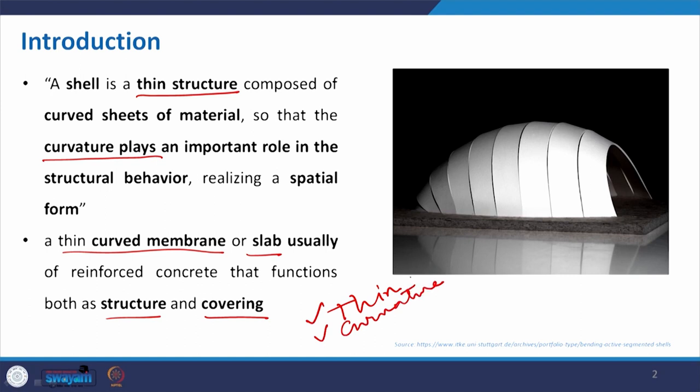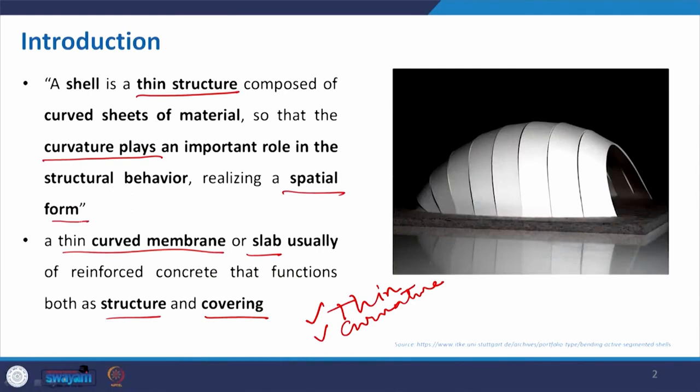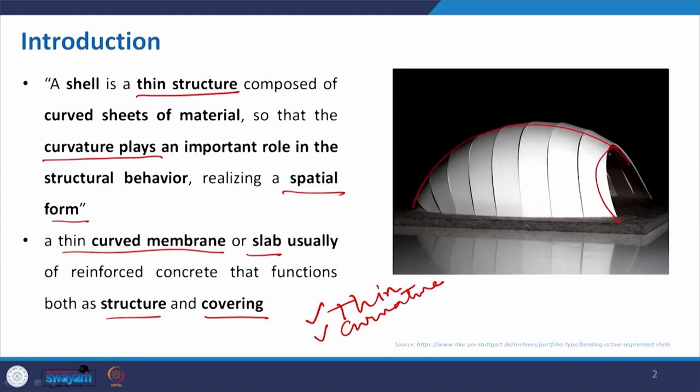These two properties — thinness and curvature — make the form, which creates a spatial form that can be used as a cover or as a structural member. As I mentioned in the very first lecture of this course, whatever structural elements we design are very much inspired from nature. This kind of structure does exist in nature and we just take that particular form and phenomena and do some engineering to make a prototype of it.